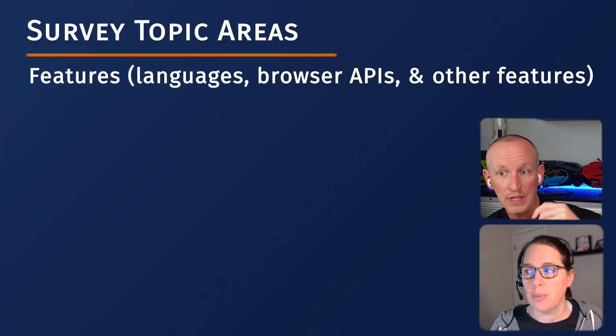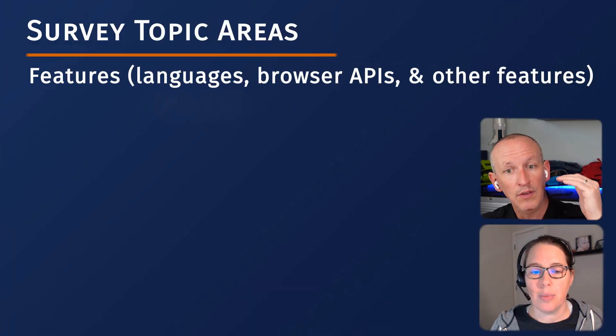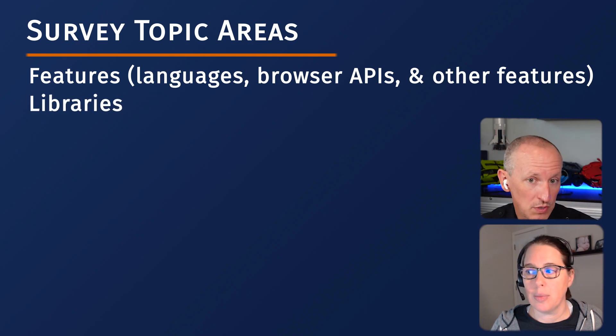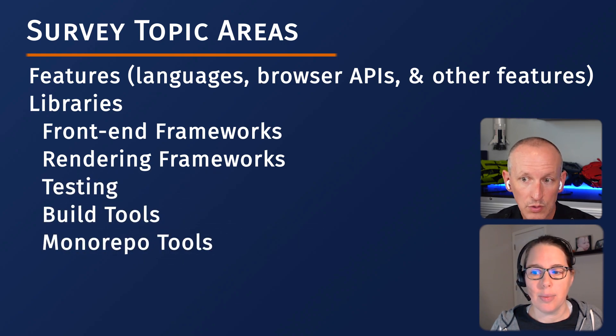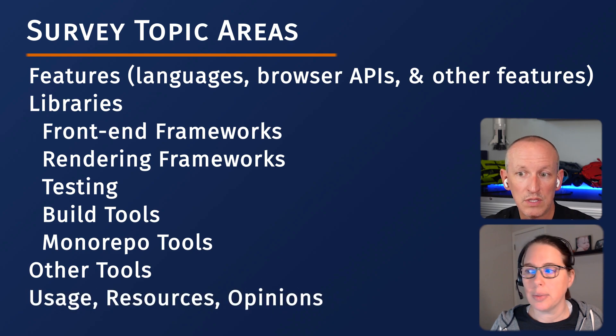Let me give you a heads up on how this is broken down — we'll have chapter links in the notes and below the video. The State of JavaScript survey covers: Features (language, browser APIs, other features), Libraries (front-end frameworks, rendering frameworks, testing, build tools, monorepos), Usage, Resources, and Opinions. And the kicker is the Awards section — Julie and I are going to look at that live together.